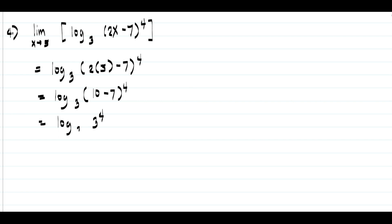log(3 raised to 4) to the base 3 is written in the form of log(a^n) to the base a, which equals n. In our case we have 4, so this will be our answer.